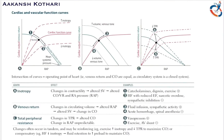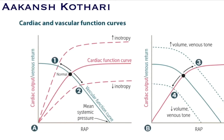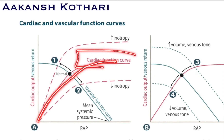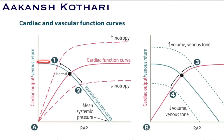Now let us talk about the cardiac and vascular function curve. On the y-axis we have cardiac output or venous return; on the x-axis we have right atrial pressure. The point where cardiac output is zero and right atrial pressure is maximum is called the mean systemic pressure point. The point where right atrial pressure is zero and cardiac output is maximum is also identified. The heart actually functions at the intersection of these two curves.